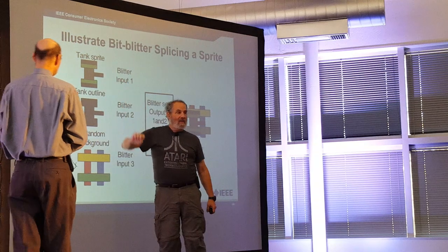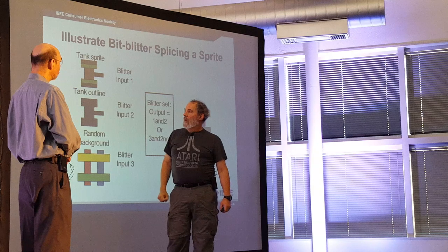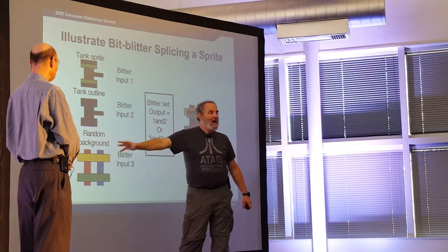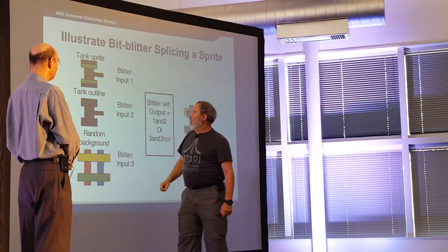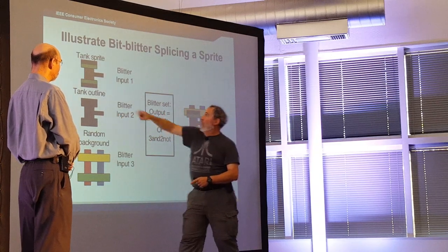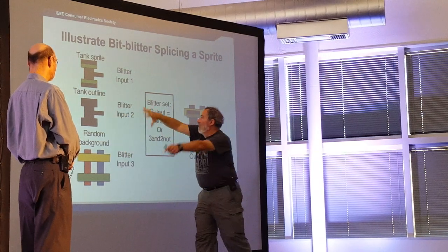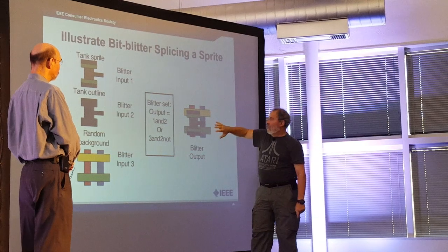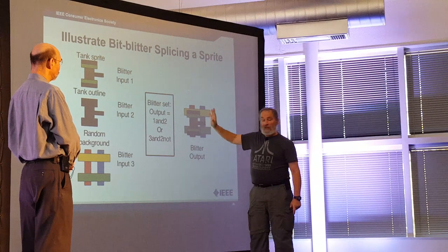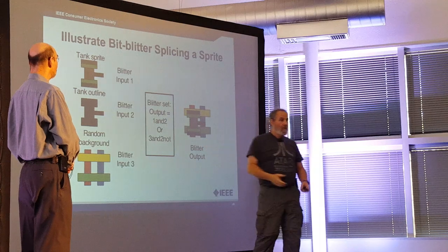Suppose I have a simple tank — it's green with black treads and a black barrel — plus a monochrome tank outline and a random background. I can run those into the blitter, using the outline as the selector: if it's true, take the tank pixel; if false, take the background pixel. The result splices the tank on top of the random background, all as fast as it can be read and written by the hardware.